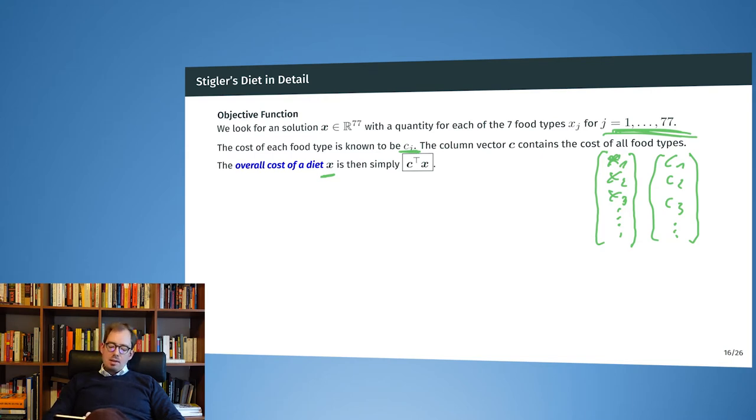We transform C into a row vector, multiply that with X. And this little expression, this is the objective function that we are minimizing. This is what is called a linear objective function, one of the simplest types that we can have.